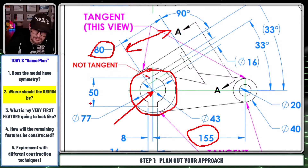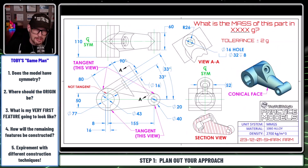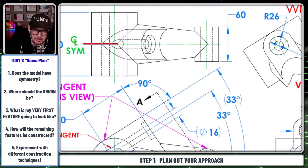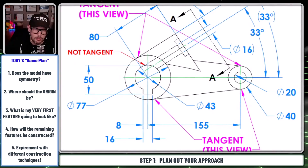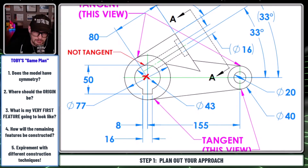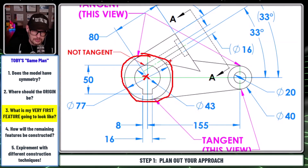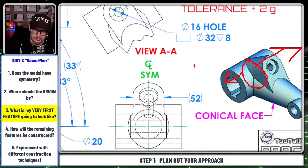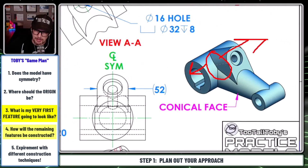Whenever I'm looking at a brand new 2D print and going from 2D to 3D, I always ask myself the same questions: where are the planes of symmetry, and how are those planes going to convert to planes in my model? This model does have symmetry - there's a plane right here that'll probably be the front plane. The origin is going to be right here at the center of this circle. My very first feature is just going to be a circle that gets extruded midplane or symmetric in both directions.